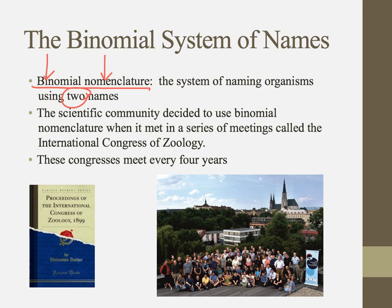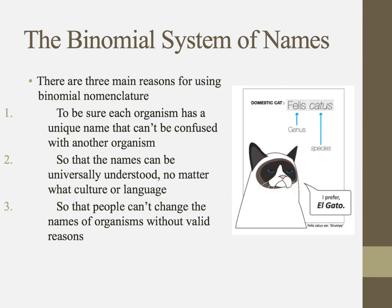These names are decided upon every four years by a group called the International Congress of Zoology — probably the most exciting party you could ever imagine — where they decide on the scientific names of organisms. Binomial nomenclature allows us to be sure that an organism has a unique name that can't be confused with another, so when you say that name you know exactly what organism you're referring to.